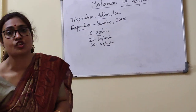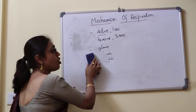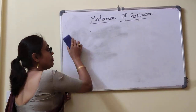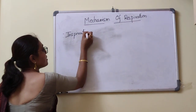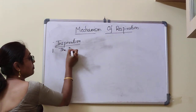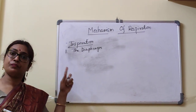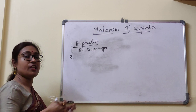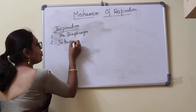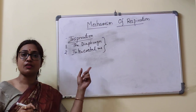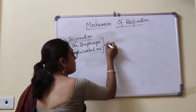Now let's consider the muscles of inspiration and expiration. The main muscle, or key muscle, of inspiration is the diaphragm. The second important muscle is the intercostal muscle. These two muscles — diaphragm and intercostal muscles — are mainly acting in case of quiet or normal breathing.